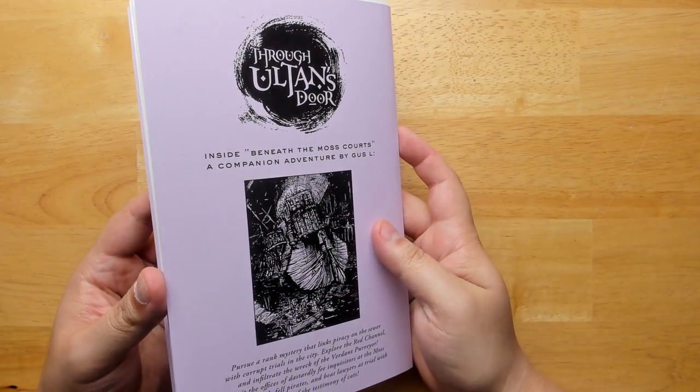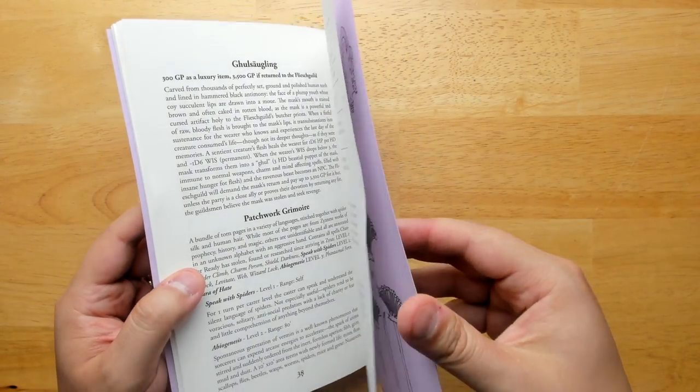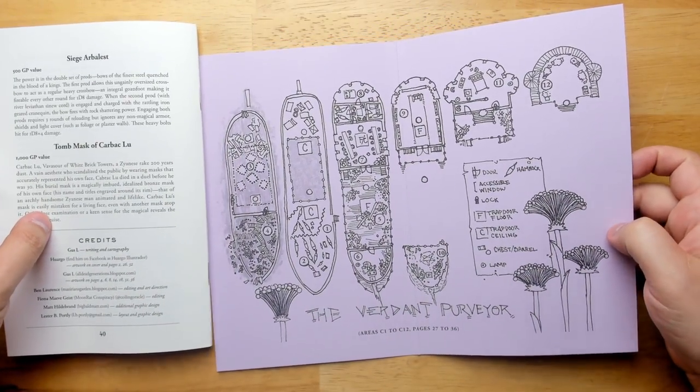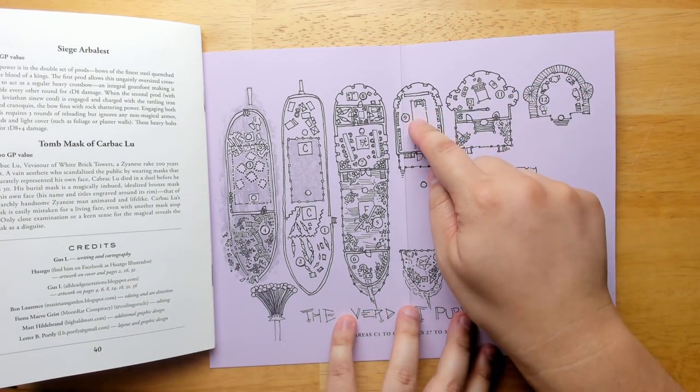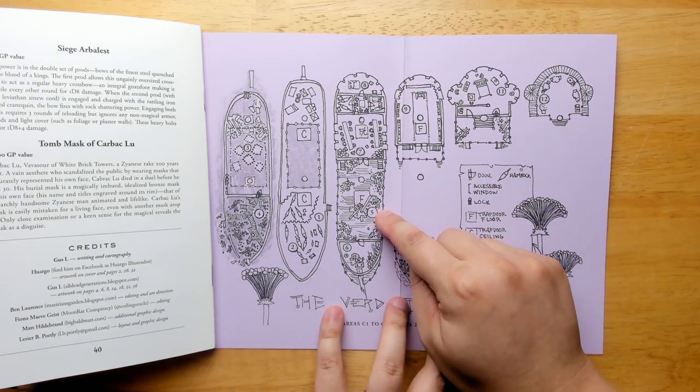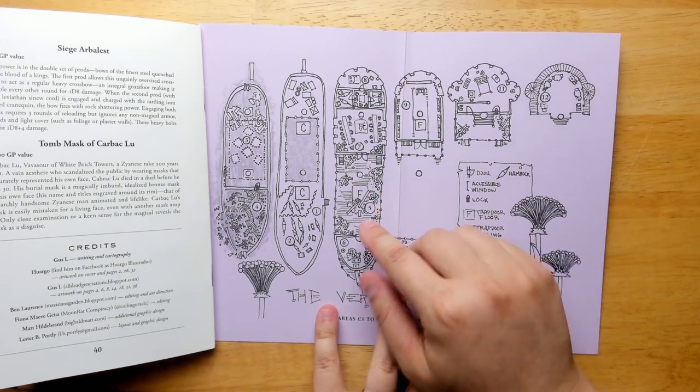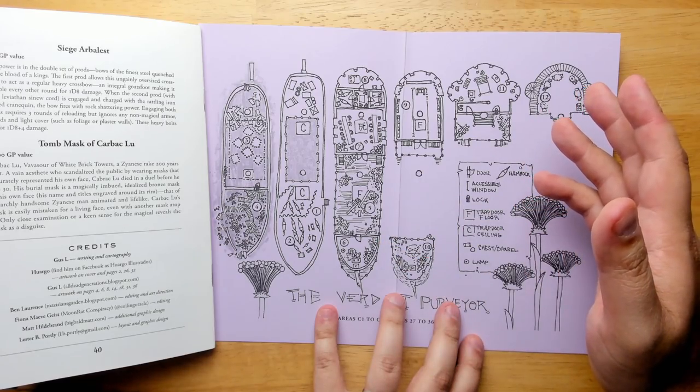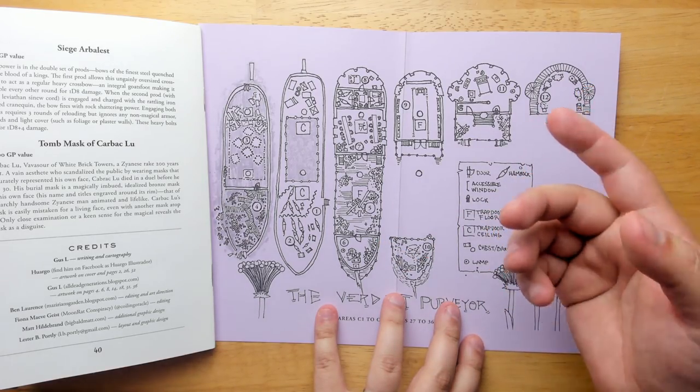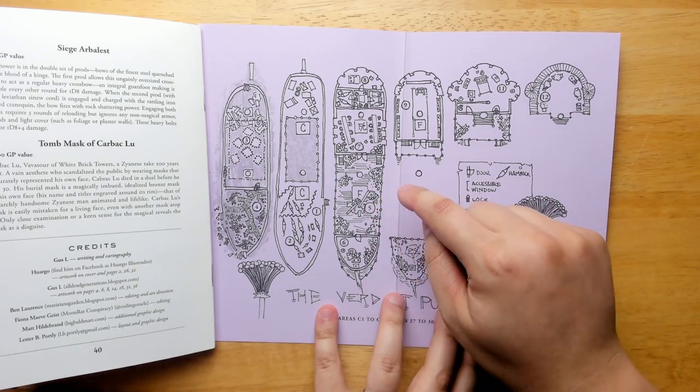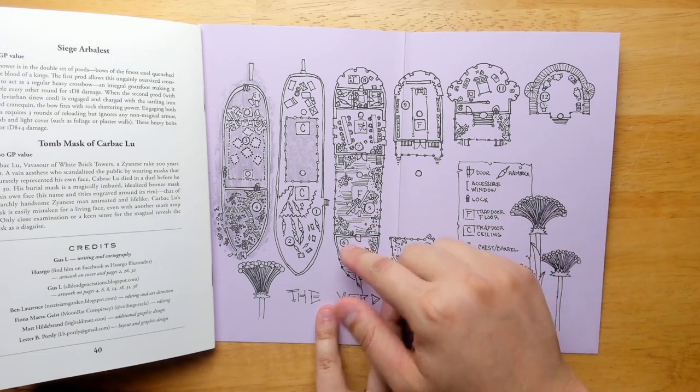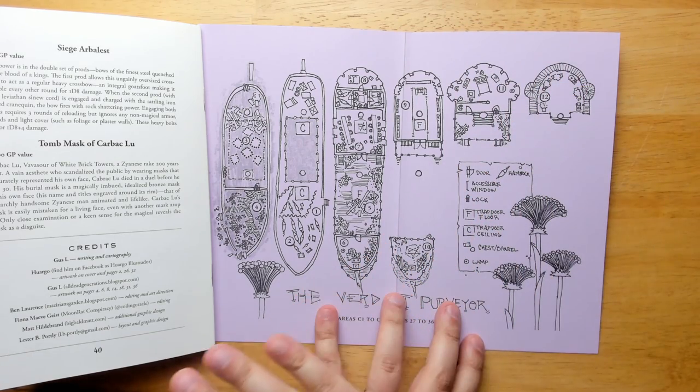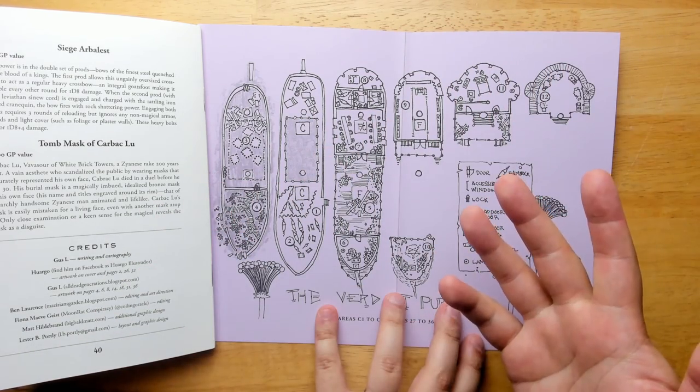The cartography is all done by Gus L and is pretty well done. It's pretty readable. I've noticed one issue though, is that a lot of these numbers kind of get lost in the cartography. And that's something we've seen before in Through Ultan's Door, where I think it would be really nice if you had the numbers and you had them outside of the ship and maybe with arrows pointing back in, because when you just scan it and you're trying to look for where's number seven, it's not easy to find.